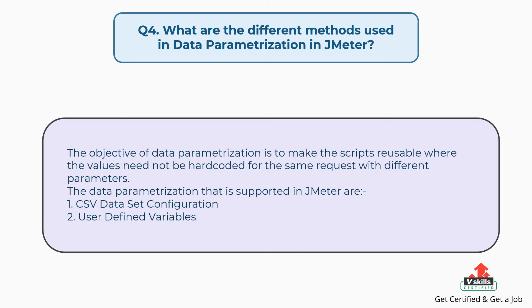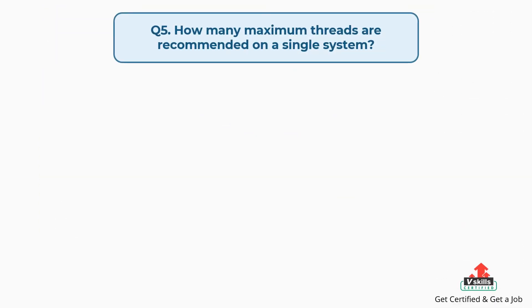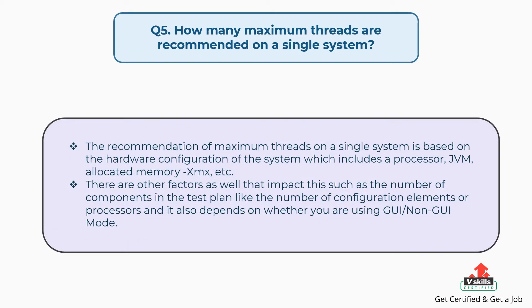Question 4: What are the different methods used in data parametrization in JMeter? The objective of data parametrization is to make scripts reusable where values need not be hard-coded for the same request with different parameters. The data parametrization methods supported in JMeter are: (1) CSV Data Set Configuration, and (2) User Defined Variables.